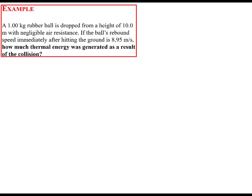A 1 kilogram rubber ball is dropped from a height of 10 meters with negligible air resistance. If the ball's rebound speed immediately after hitting the ground is 8.95 meters per second, how much thermal energy was generated as a result of the collision?